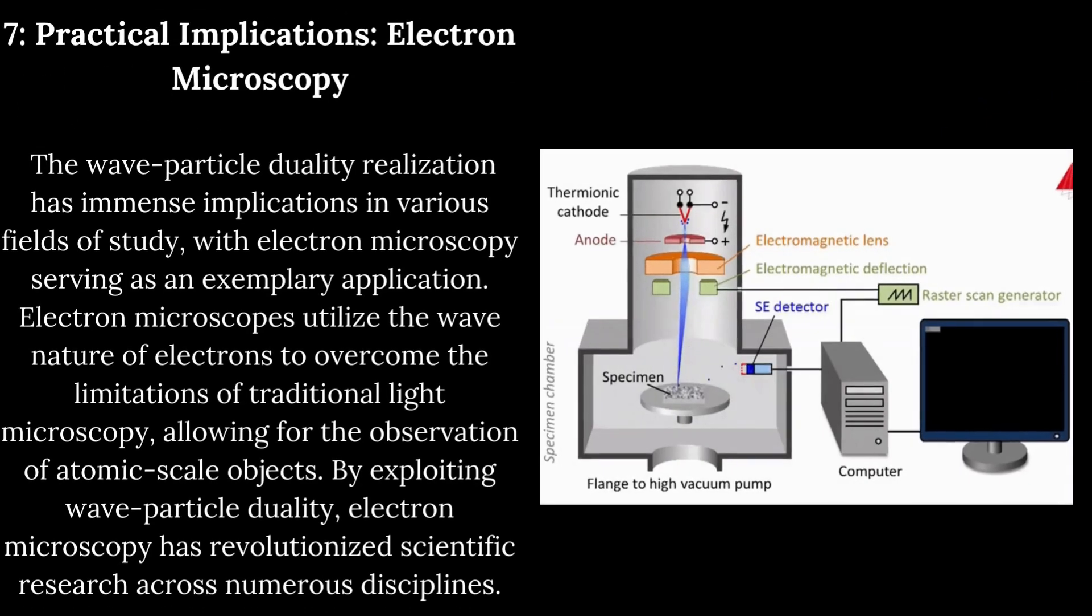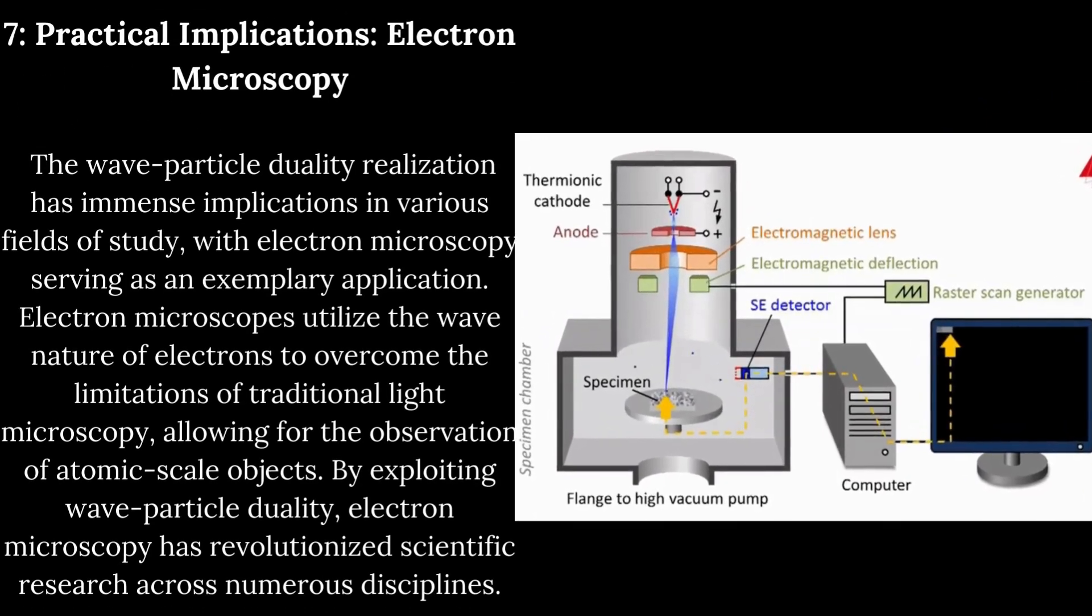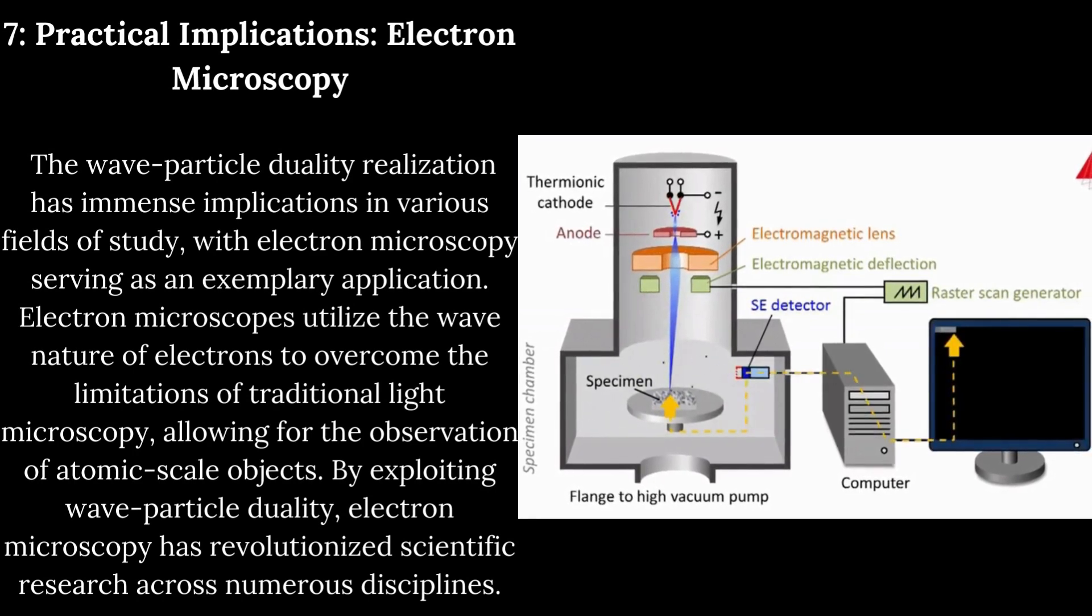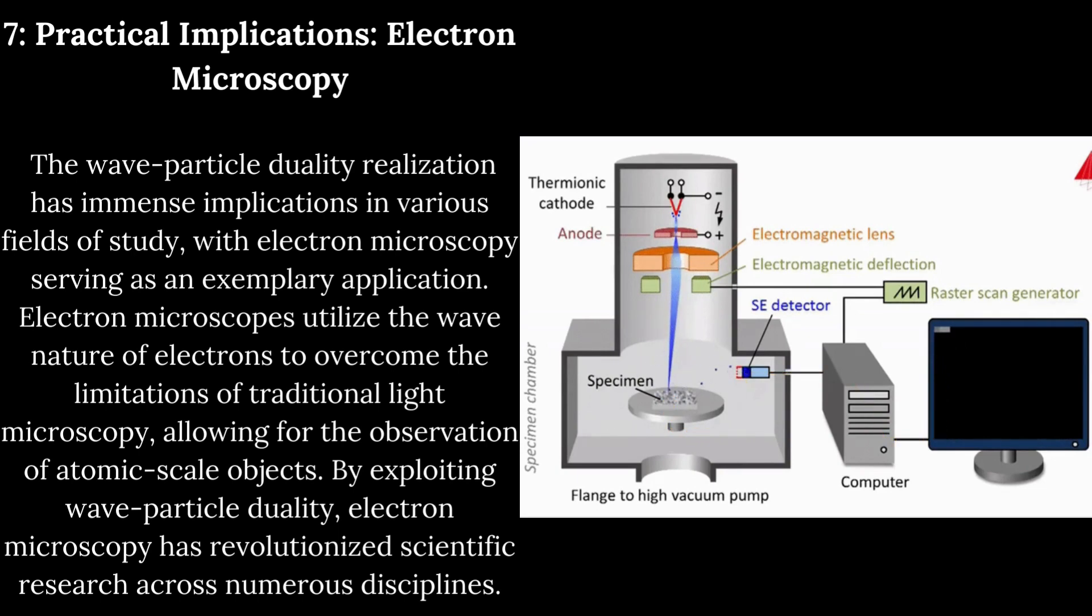Practical implications: electron microscopy. The wave-particle duality realization has immense implications in various fields of study, with electron microscopy serving as an exemplary application. Electron microscopes utilize the wave nature of electrons to overcome the limitations of traditional light microscopy, allowing for the observation of atomic-scale objects. By exploiting wave-particle duality, electron microscopy has revolutionized scientific research across numerous disciplines.